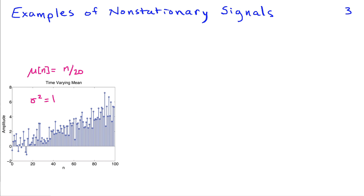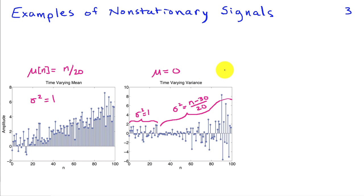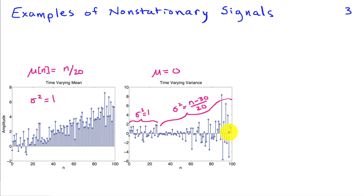Now we can look at some non-stationary signals. In the first example, I've simulated a signal where the mean changes with time — given by n over 20 — so the signal initially is symmetric about zero, and then the average value keeps growing. For a second example, I chose a zero mean but change the variance of the signal. For the first 30 samples, we have a unit variance signal, and then for the rest of the waveform the variance grows with n, specifically as n minus 30 divided by 20. You can clearly see this is non-stationary because the characteristics of the signal are changing with time.